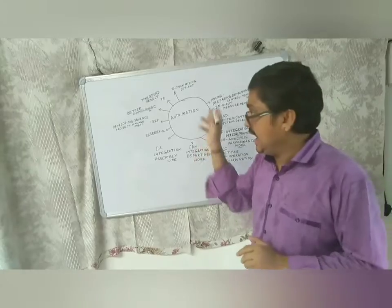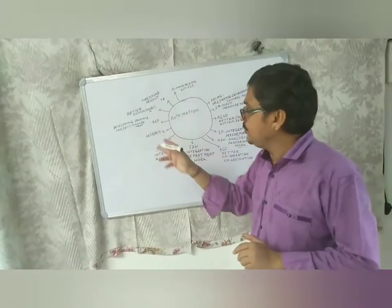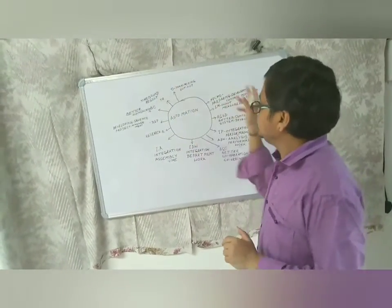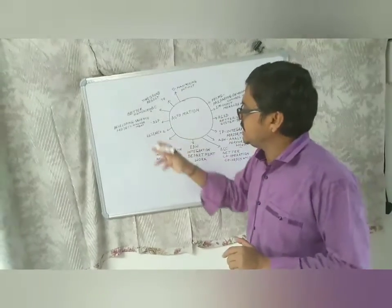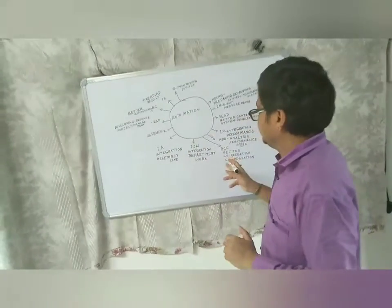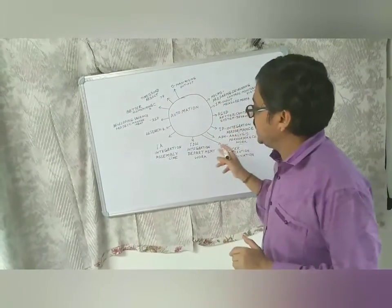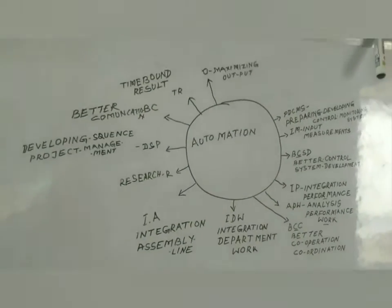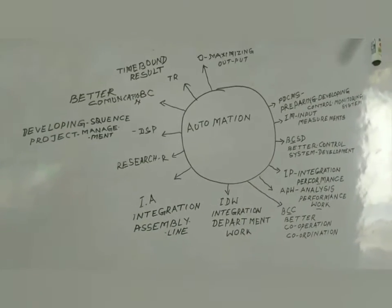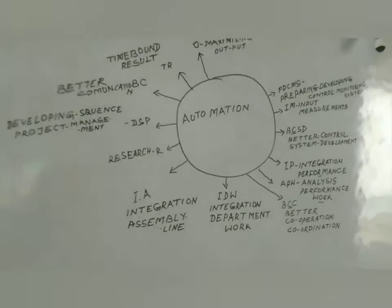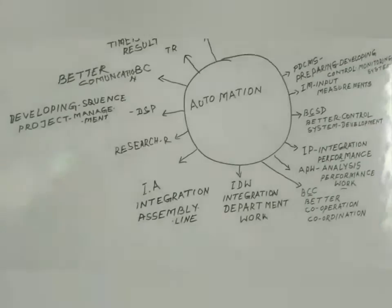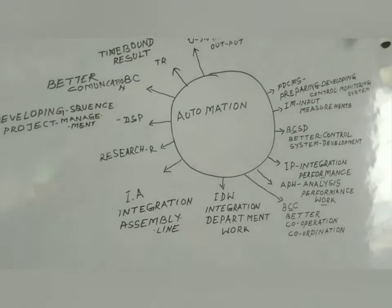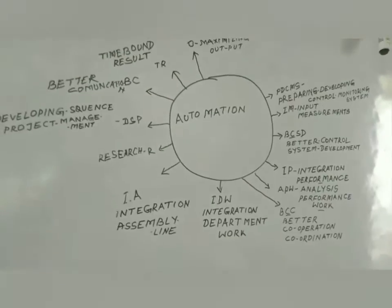Automation and how it is important in project management as well as in designing any manufacturing plant. In this diagram we go through the first thing, which is integration with the assembly line. Assembly line we have already discussed — in that part we discussed how automation is assembled with the assembly line.